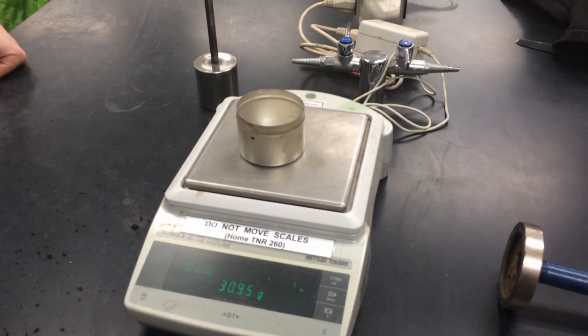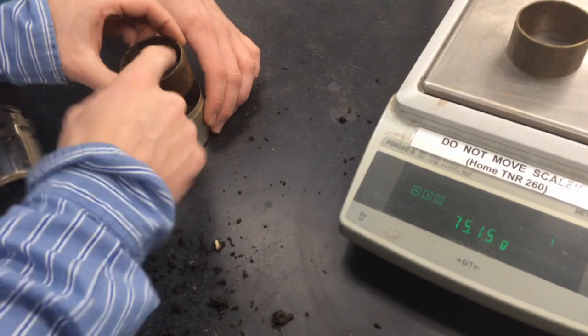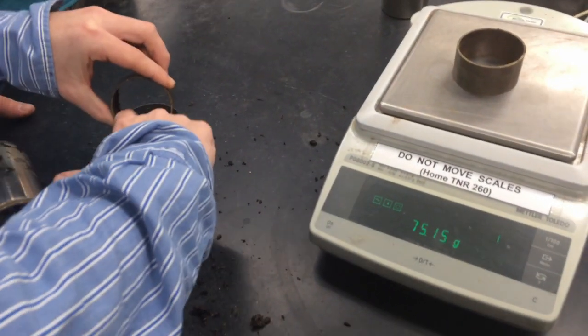Weigh an empty soil tin and record its mass. Empty the ring of soil into the tin, making sure to get all of the soil from the edges of the ring.